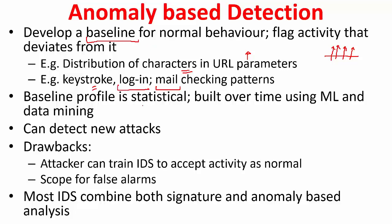This baseline profile is statistical; it is built over time using machine learning and data mining techniques. The advantage is you can detect a new attack because it is something not conforming to normal behavior, so you don't really need to have a signature in place. But the problem is that an attacker can train the IDS to accept malicious activity as normal if he knows what is happening internally. This also has scope for false alarms. Most IDS systems combine both signature and anomaly-based analysis.